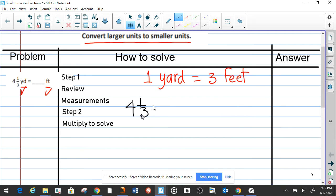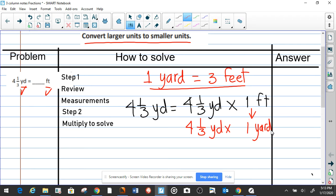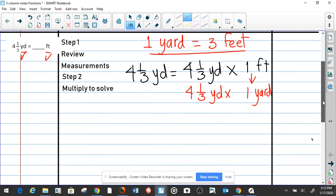Our multiplication is going to be 4 and 1/3 yards, and we're going to set it up in this manner. We're going to write 1 and 1/3 yard that we have to convert into feet. So now we're going to rewrite the numbers: 4 and 1/3 yards times, and we're going to convert this. How much is one yard? Like we said, it equals 3 feet, so we're going to write 1 yard.